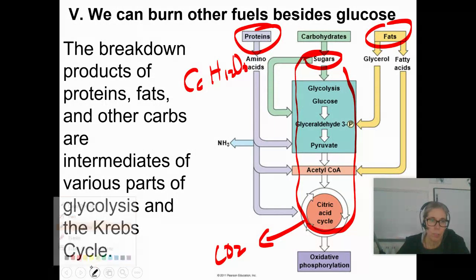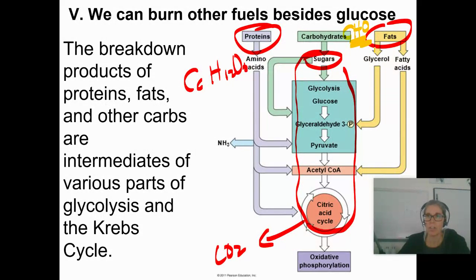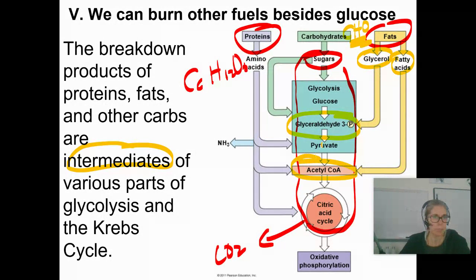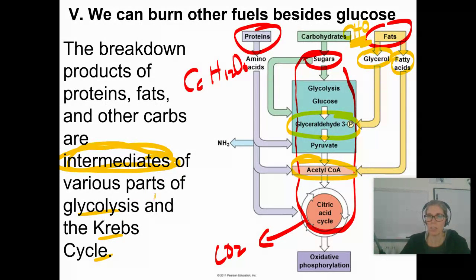For example, if you break down fats — fats have the same atoms: carbon, hydrogen, and oxygen. Glycerol can be converted to glyceraldehyde-3-phosphate. You do not need to memorize that intermediate; you just need to know that it's an intermediate. Fatty acids can be converted to acetyl-CoA. Don't memorize which molecule is converted to which — you just need to know that fats' breakdown products can be converted to intermediates of some part of the whole glycolysis-Krebs cycle pathway.